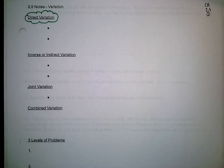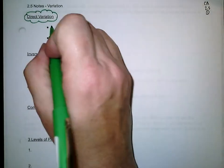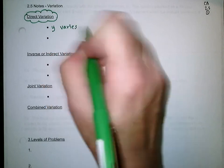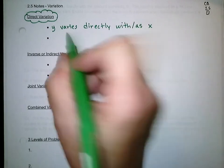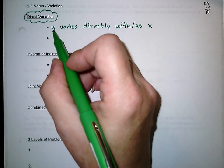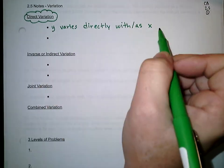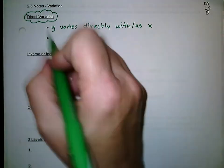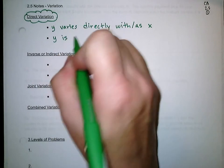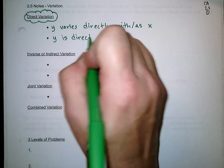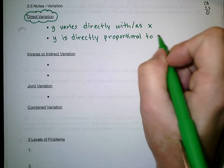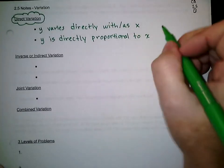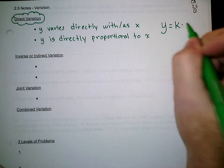The first type of variation is direct variation. You'll recognize it because it might say 'Y varies directly with X' or 'Y varies directly as X.' The formula we'll follow is Y equals K times X.